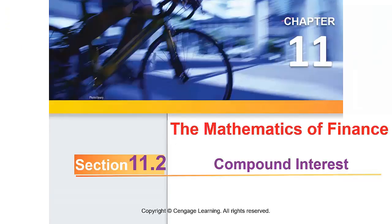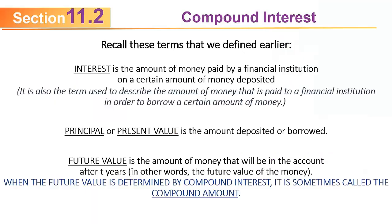Section 11.2 on compound interest. Recall from the previous section we defined terms like interest, principal or present value, and future value. In the discussion of compound interest — today's topic — the future value is also sometimes called the compound amount. Principal and present value are interchangeable, and in the context of compound interest, future value and compound amount are equivalent terms.